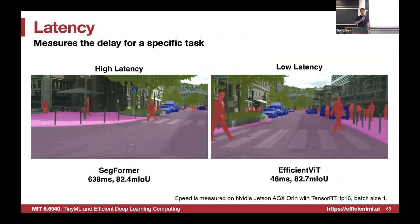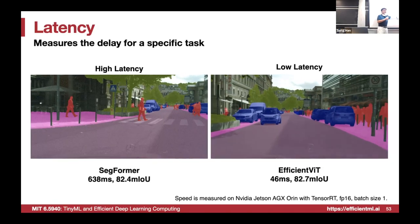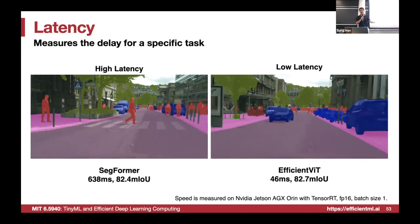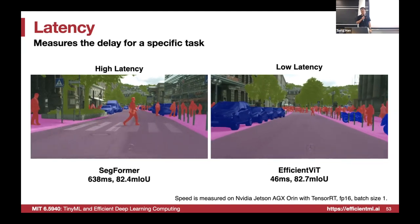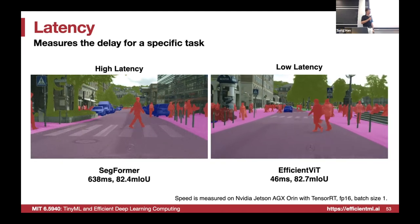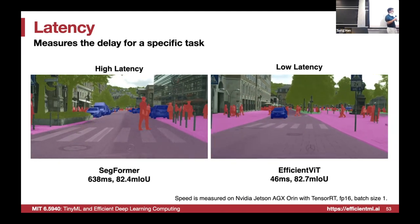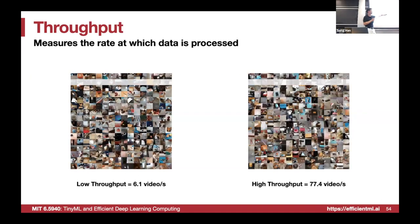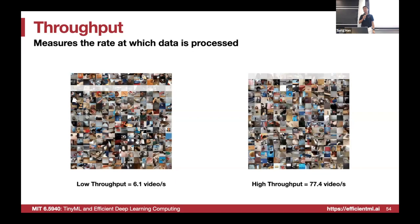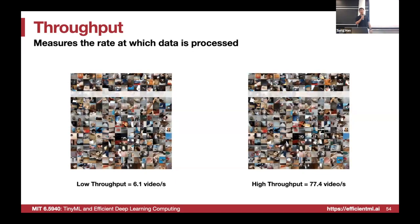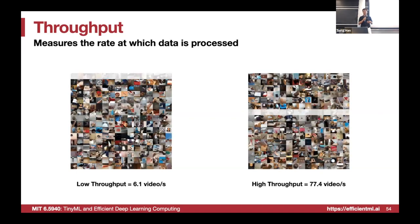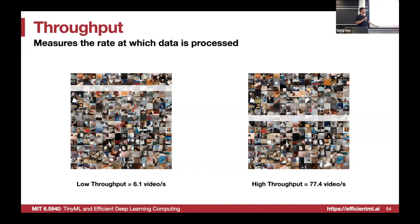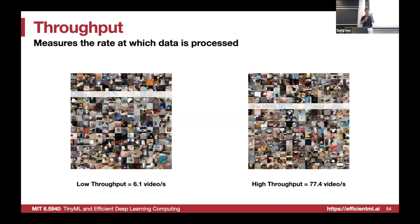Latency measures the delay of a specific task. For example, processing each frame requires 638 milliseconds for the baseline model — that's the latency per frame. EfficientViT requires only 46 milliseconds per frame. Throughput measures the rate at which data is processed. Here we can process 6 videos per second versus 77 videos per second from the Temporal Shift Module, which we'll introduce in the video understanding lecture.